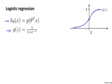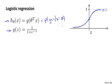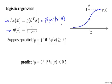What I want to do now is try to understand better when this hypothesis will make predictions that y is equal to 1 versus when it might make predictions that y is equal to 0, and understand better what the hypothesis function looks like, particularly when we have more than one feature. Concretely, this hypothesis is outputting estimates of the probability that y is equal to 1, given x and parameterized by theta. So if we wanted to predict whether y equals 1 or y equals 0, here's something we might do.